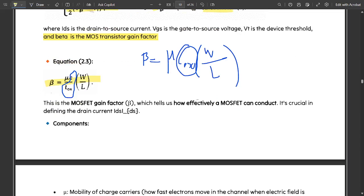This is the MOSFET gain factor which tells us how effectively a MOSFET can conduct. The conduction of the MOSFET would be basically dependent on this gain factor. It is crucial in defining the drain current IDS.